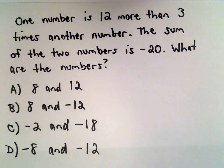In this question, one number is 12 more than 3 times another number. Maybe that's enough to make your head spin, but bear with me. The sum of the two numbers is negative 20. What are the two numbers?